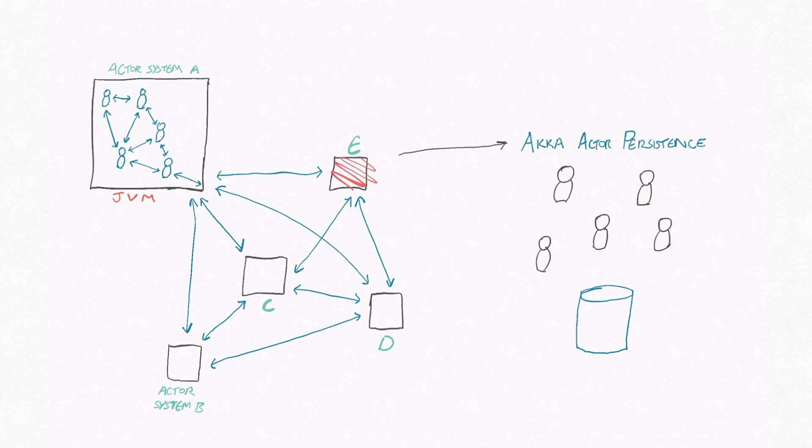If either your actor, actor system, or JVM crashes unexpectedly, or your actor is migrated to another node, for example when scaling a cluster of actor systems, then you can use Akka Persistence to recover them.